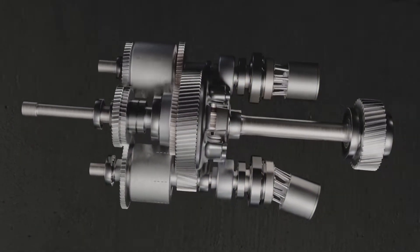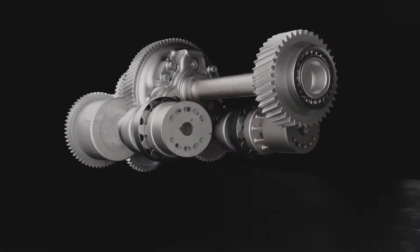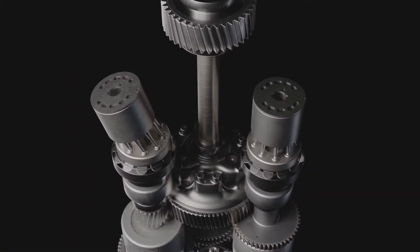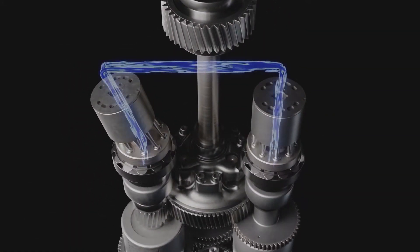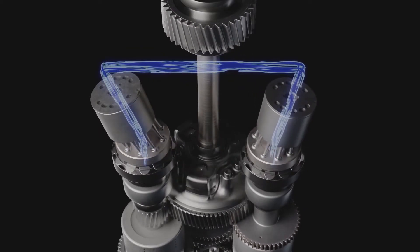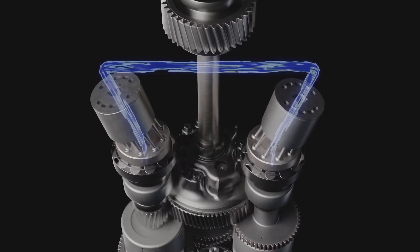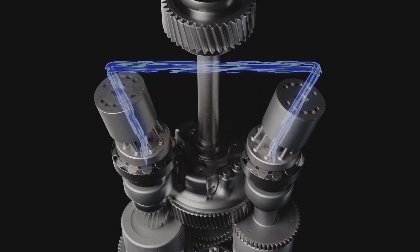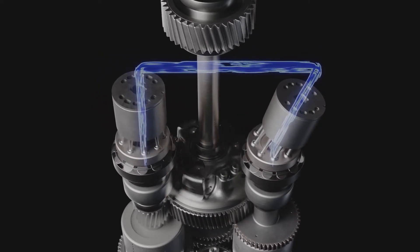A special feature of the TTV transmission is the hydrostat. Because, depending on the ground speed, the hydraulic units work either as a hydraulic pump or as a hydraulic motor. This is made possible by the two-stage planetary gear unit in conjunction with the range couplings.